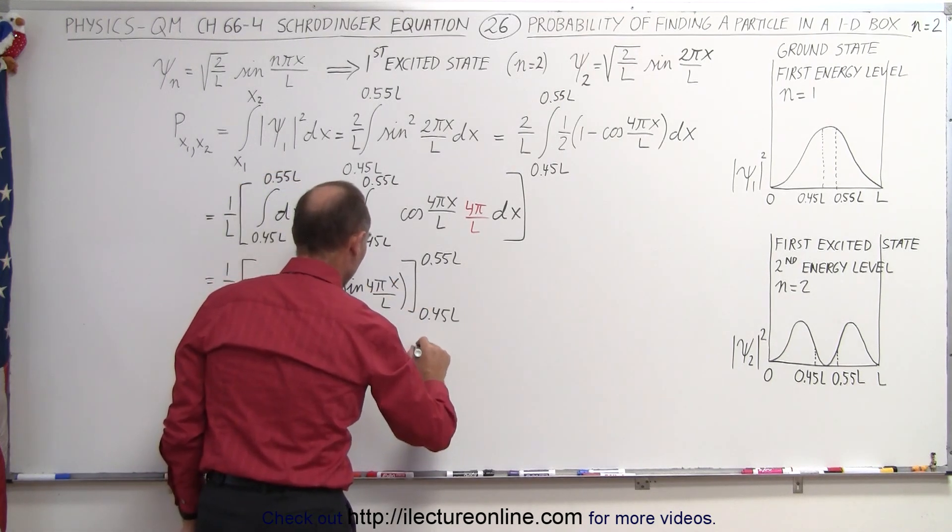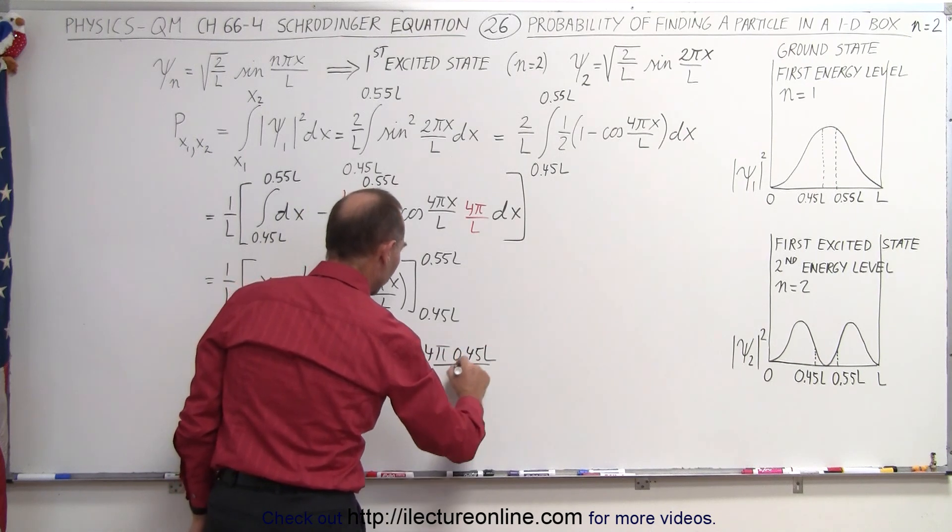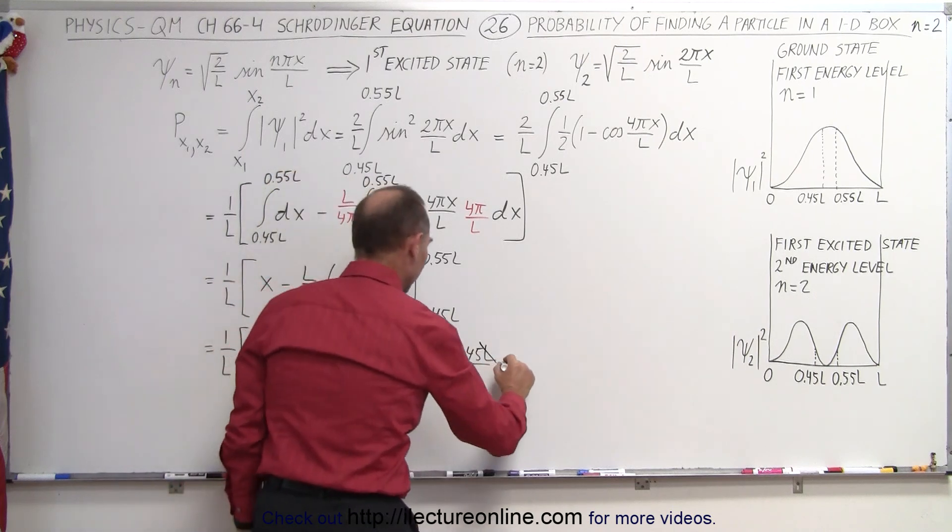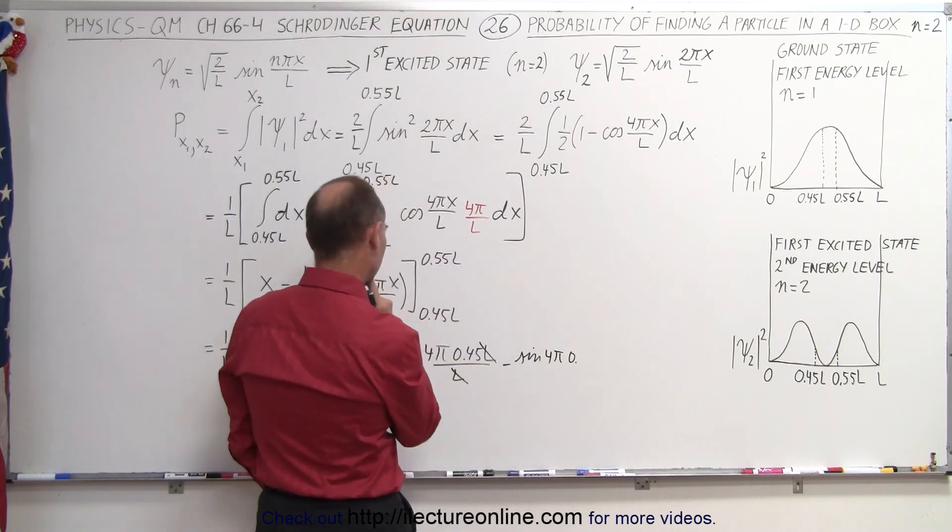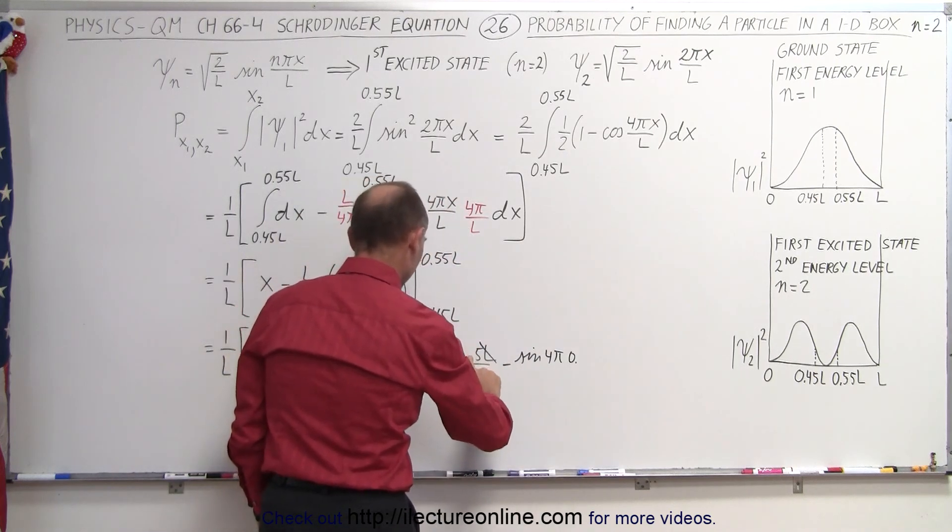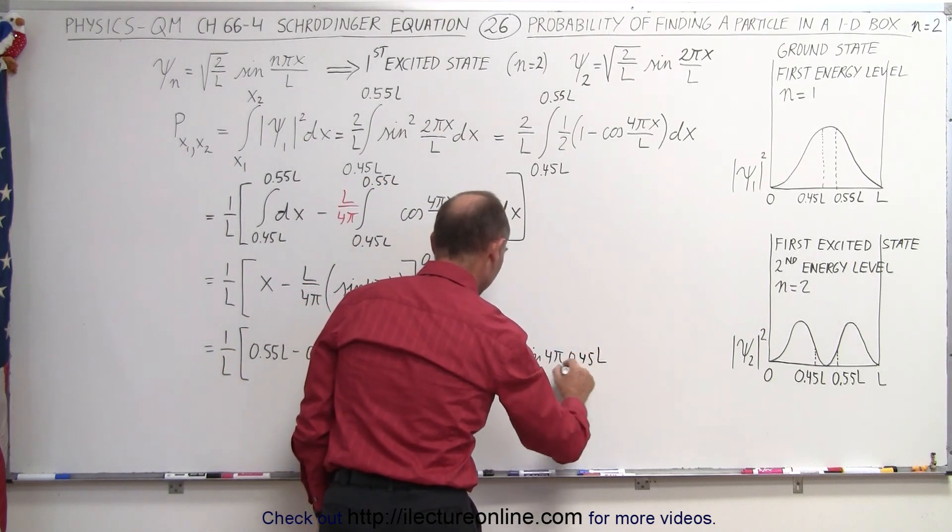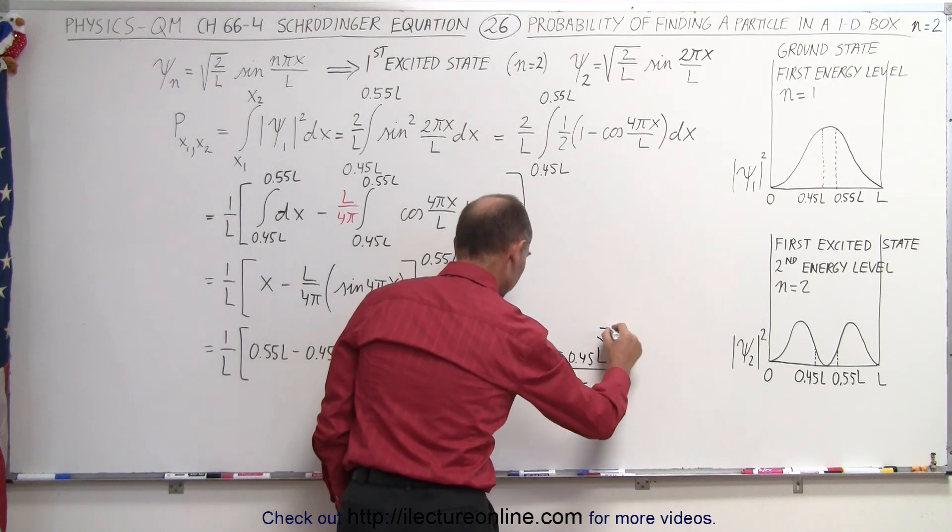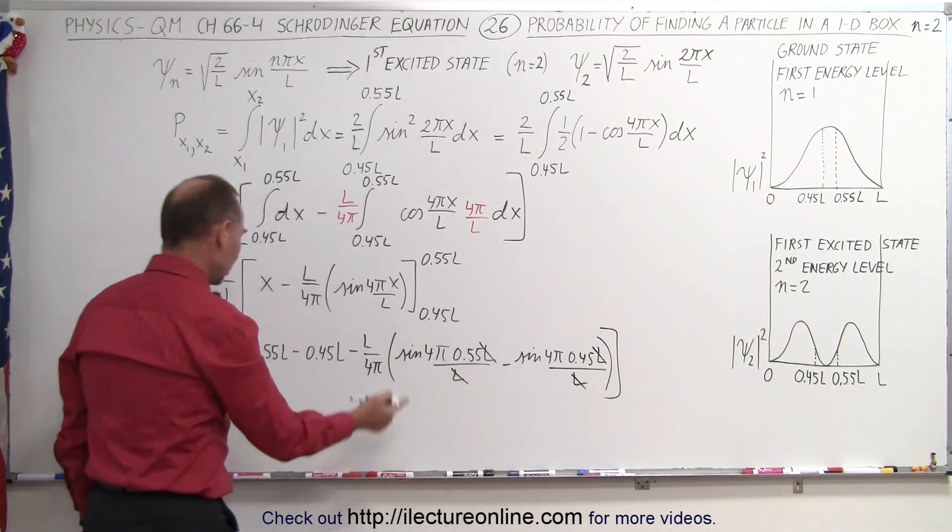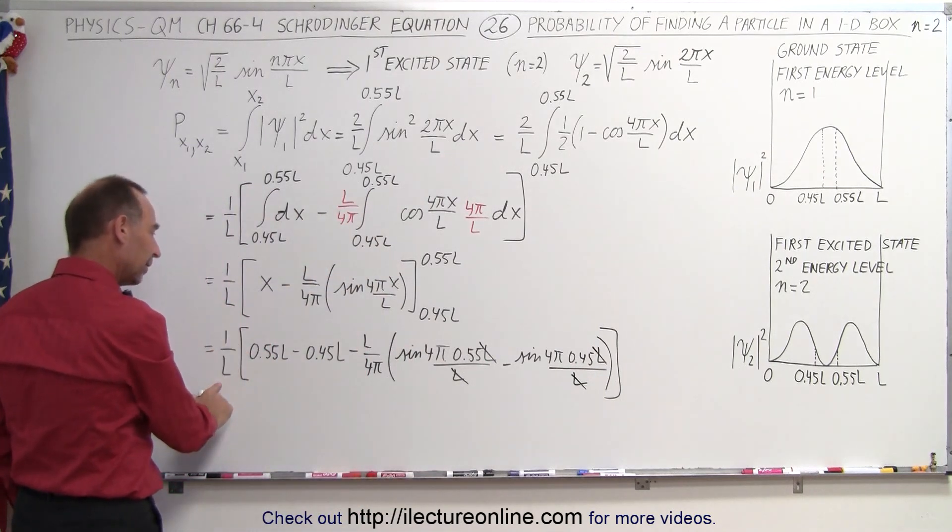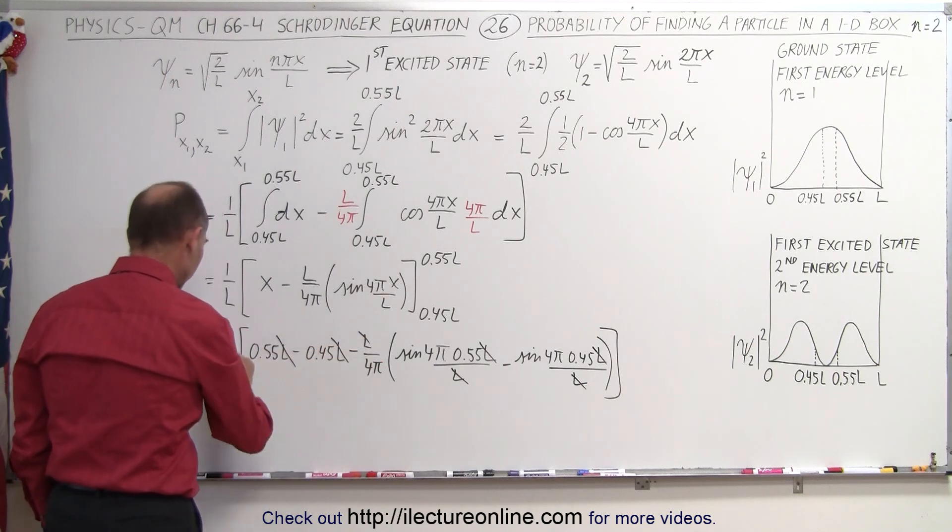I get the sine of 4π times 0.55L over L and of course the L's cancel out and then minus the sine of 4π times 0.45L over L like this and of course the L's cancel out here as well. And then when you look over here we have a 1 over L in the front. We have an L and L and L in the three terms so those L's cancel out with this L over here. Now we can go ahead and simplify the rest.